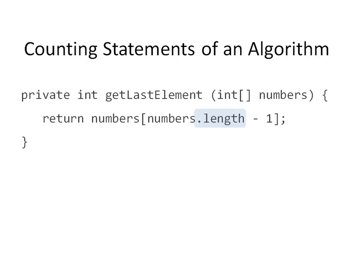First, we are accessing the final attribute length from the array. Then, we subtract 1. The resulting value is the index of the array. So we are accessing the index, and then we are returning the value. All together, that makes 4 steps.